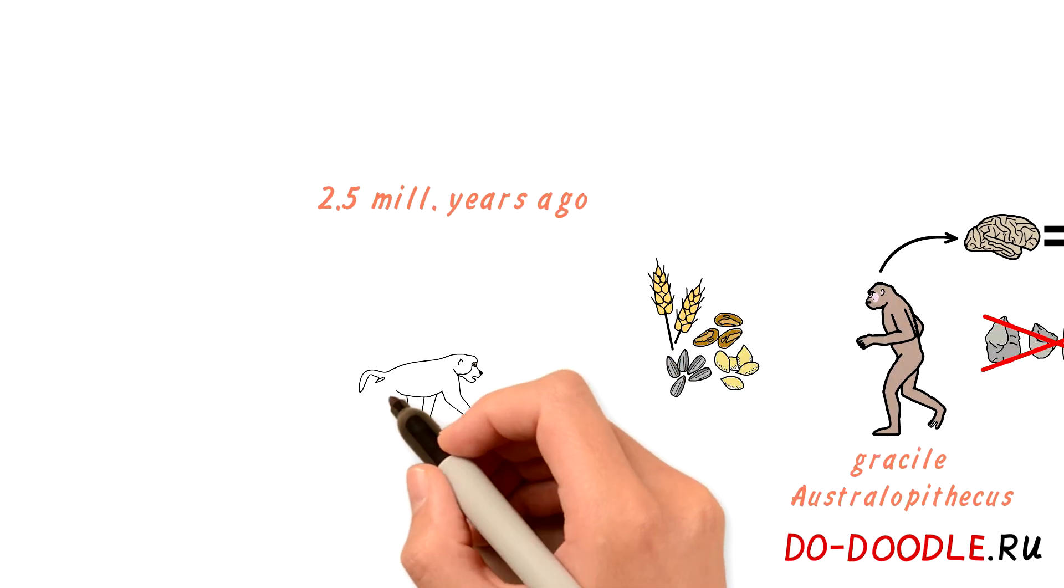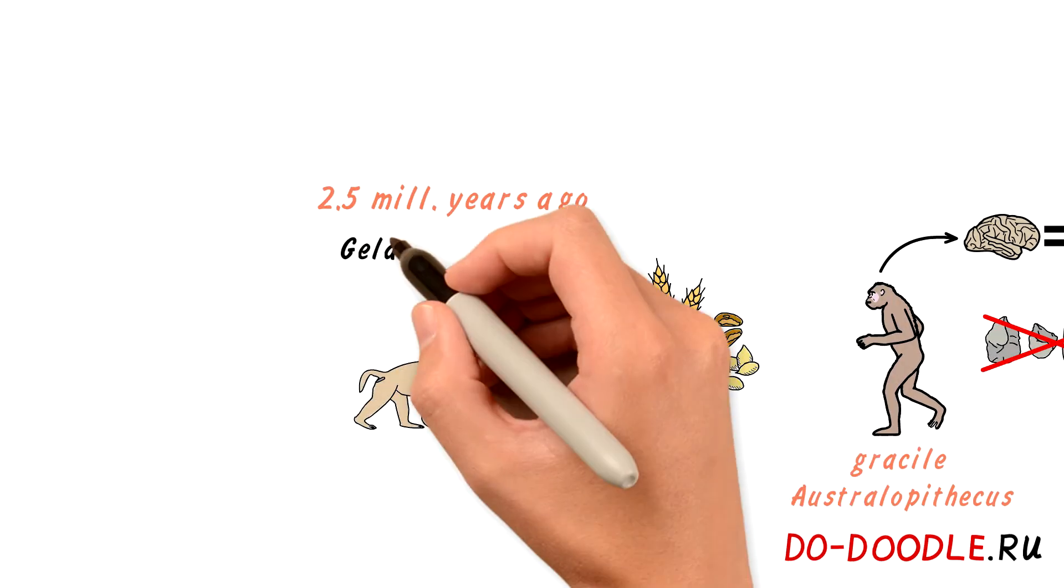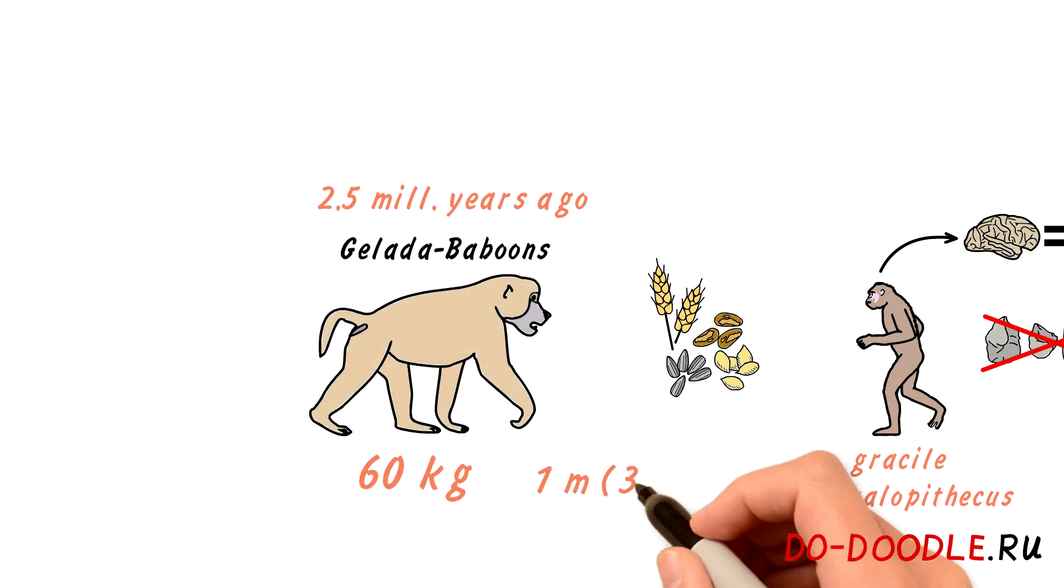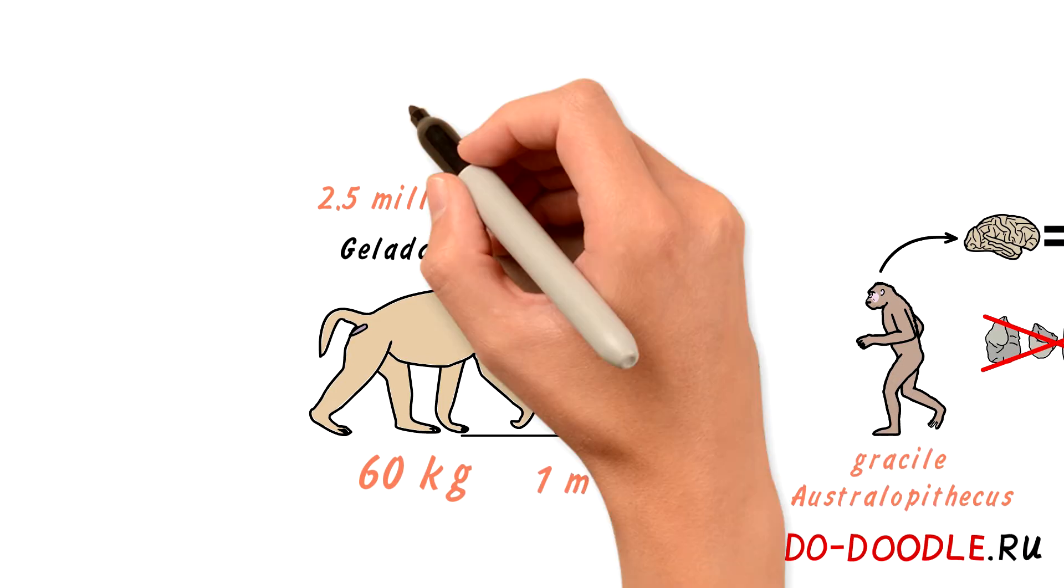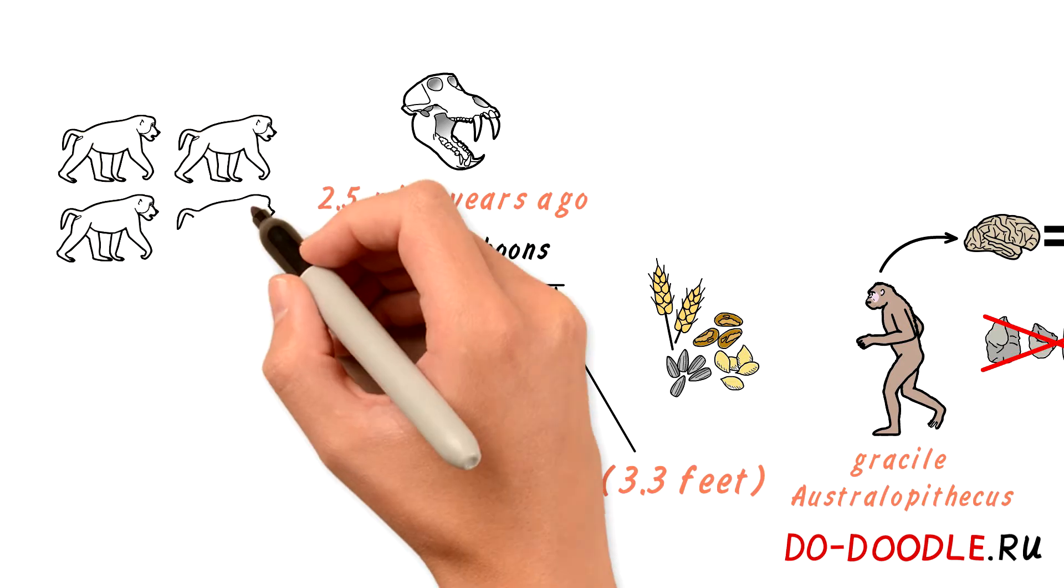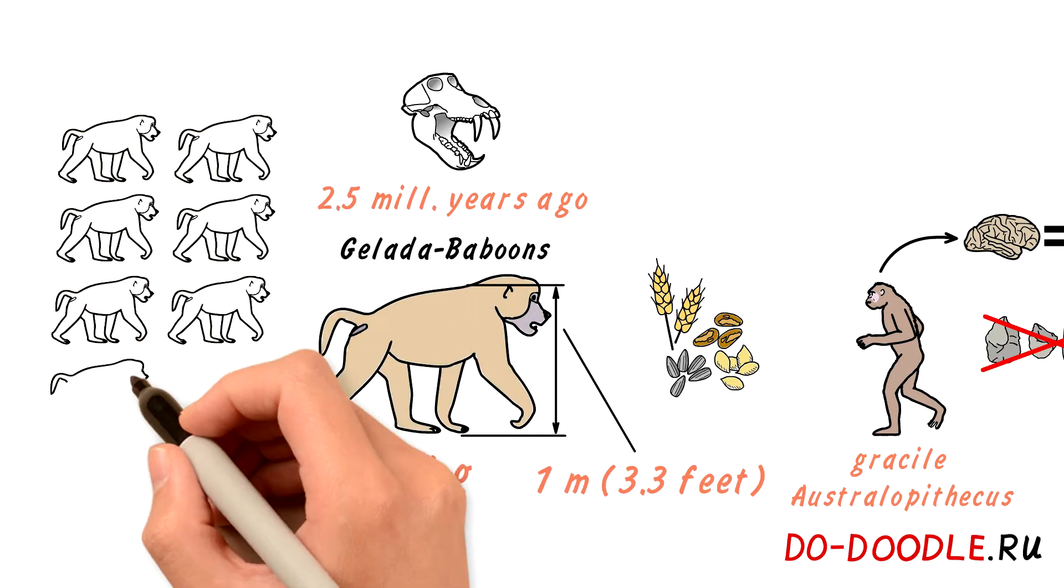Two and a half million years ago, until then relatively small gelada baboons managed to grow to a magnificent size of around 60 kilos and up to a meter tall at the crest. They had long fangs and were able to cooperate in large packs. They were aggressive and well-organized.